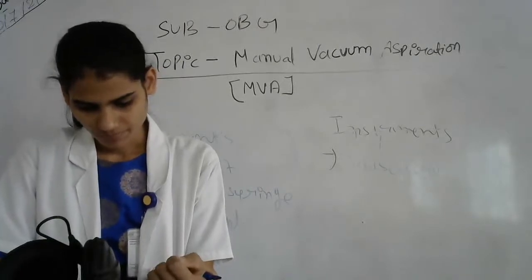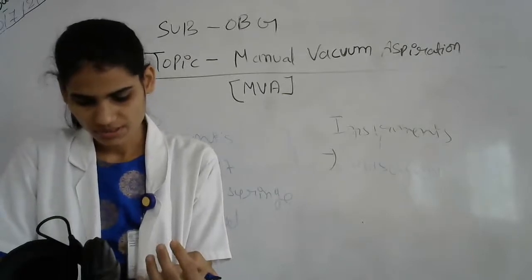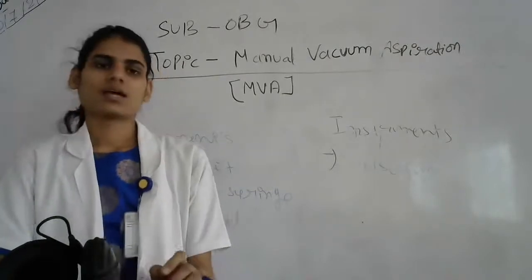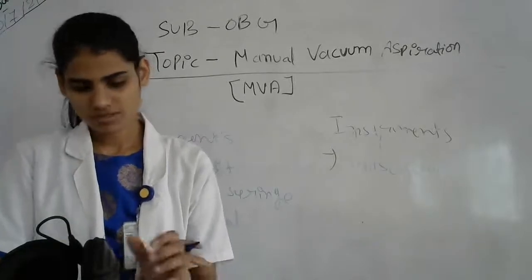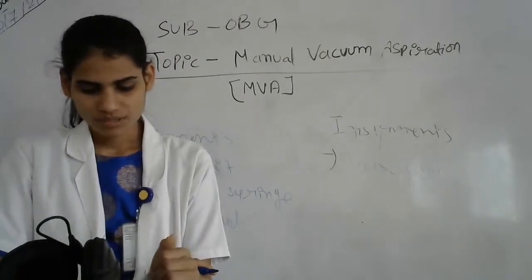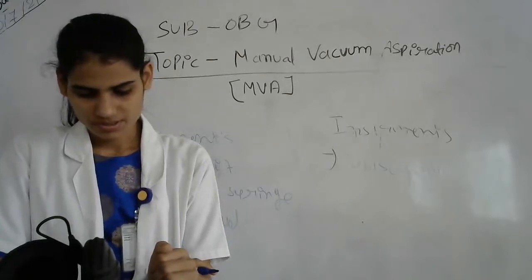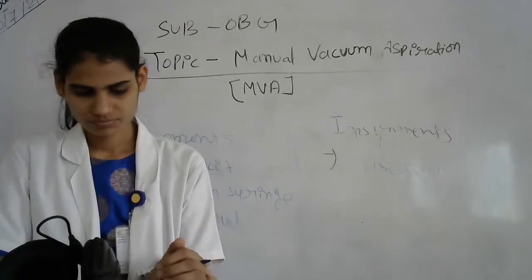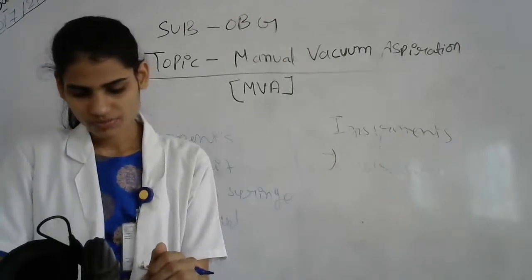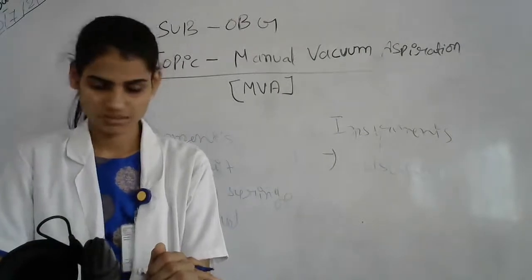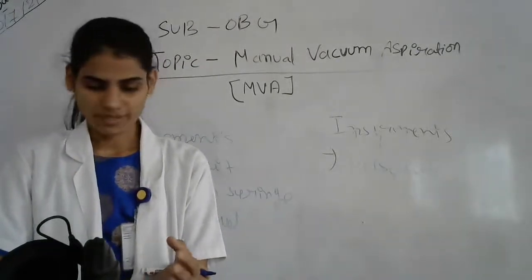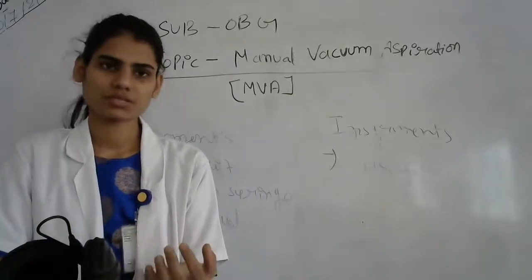Then, priming the cervix with agents such as prostaglandins around three hours prior to the procedure, to reduce the risk of cervical trauma and damage. For pain management, the goal should be to reduce pain and anxiety — psychological pain, anxiety, fear, and apprehension — as well as cervical pain due to dilatation and uterine cramping due to manipulation. Drugs must be most effective at the time of the procedure and should be administered 30 to 45 minutes before the procedure.